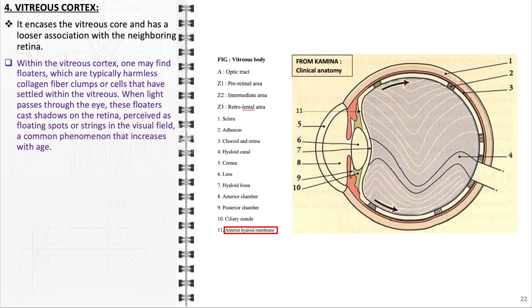Together, these components ensure that the vitreous body supports the eye's structure, contributes to intraocular pressure, and facilitates clear vision by allowing light to travel uninterrupted to the retina.